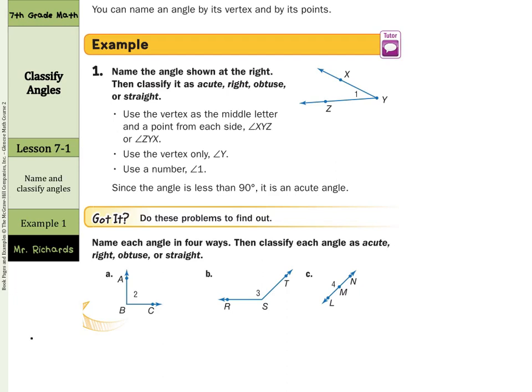Name these angles in four ways and classify each as acute, right, obtuse, or straight. We can start with the vertex — the vertex is angle B. We could use the number angle 2. Using the vertex as the middle letter, we get angle ABC, or going the other way, angle CBA. This looks to be 90 degrees, so this is a right angle.